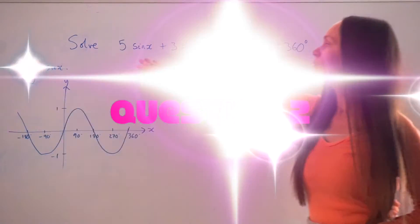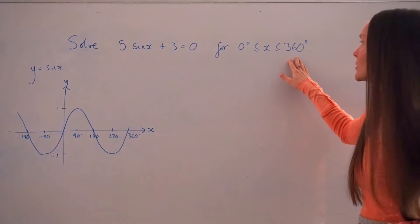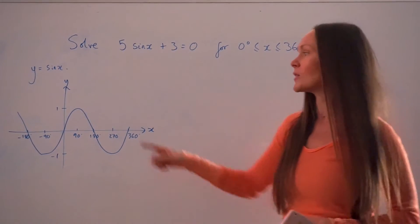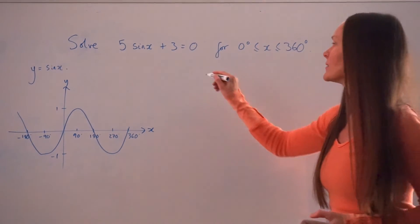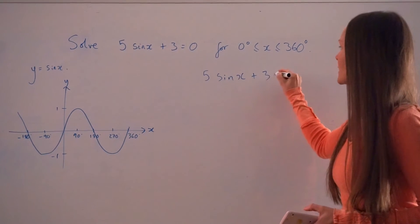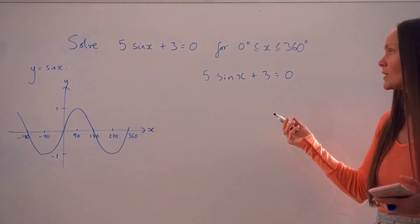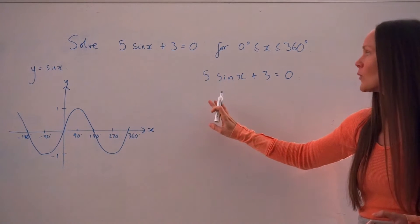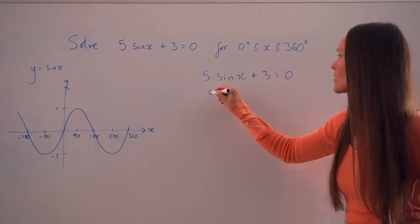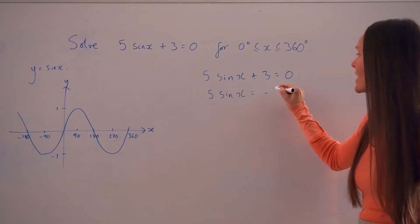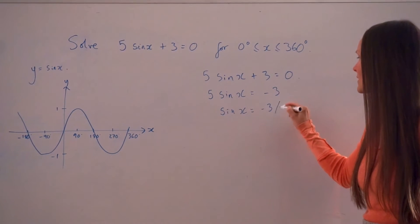In the next question, we have to solve 5 sin x plus 3 equals 0 for values of x between 0 and 360 degrees. Because I'm solving for sin x, this time I've done a quick sketch of the graph y equals sin x. Starting the same way, I'll write down the equation: 5 sin x plus 3 equals 0. I need to rearrange to make sin x the subject — subtracting 3 from both sides gives 5 sin x equals negative 3. Then dividing by 5 gives sin x equals negative 3 fifths.